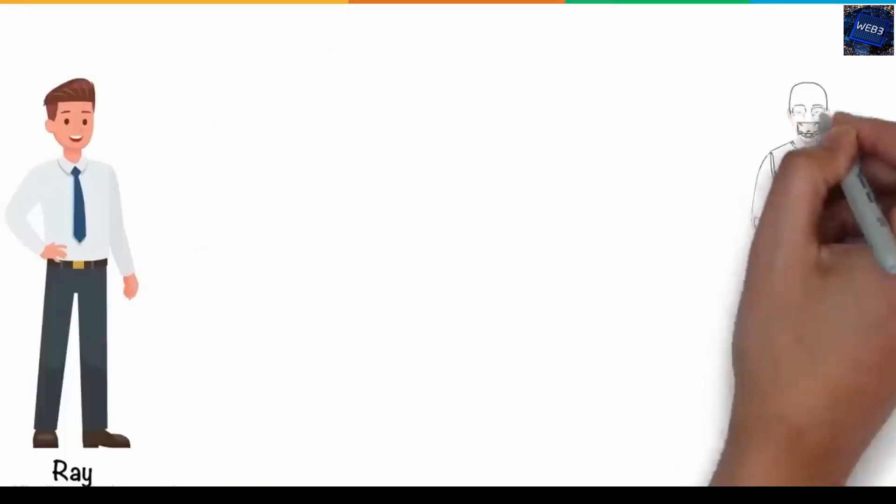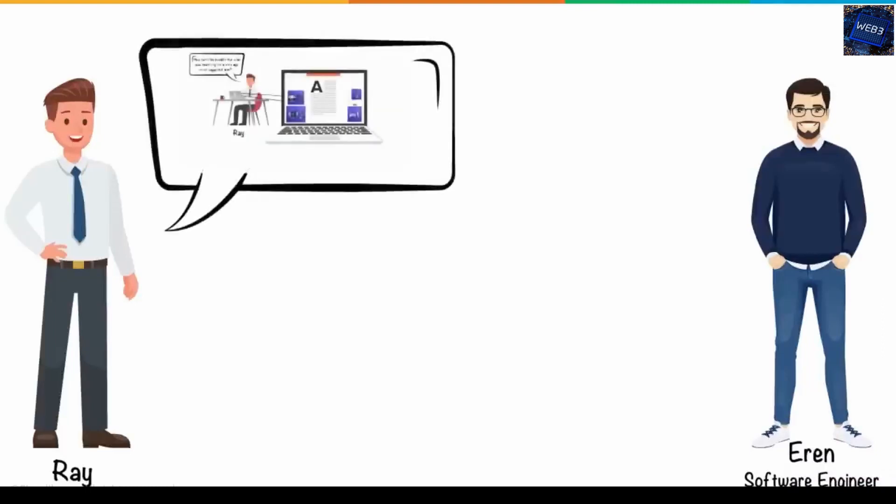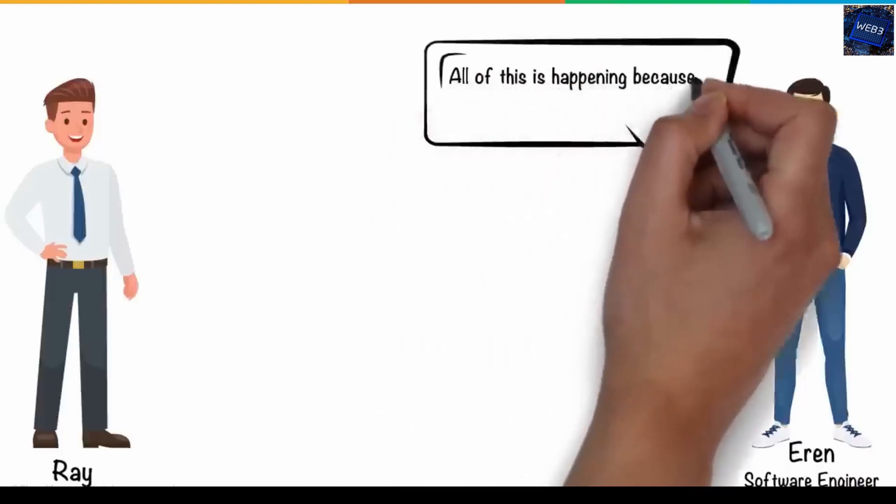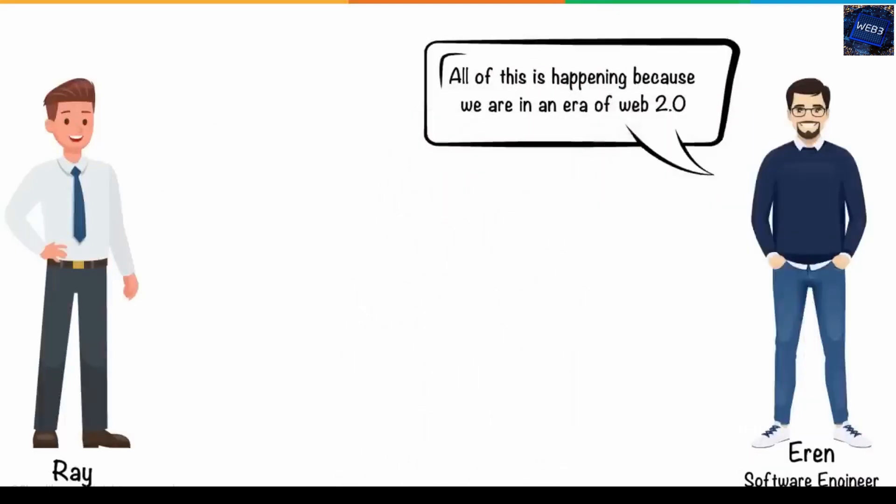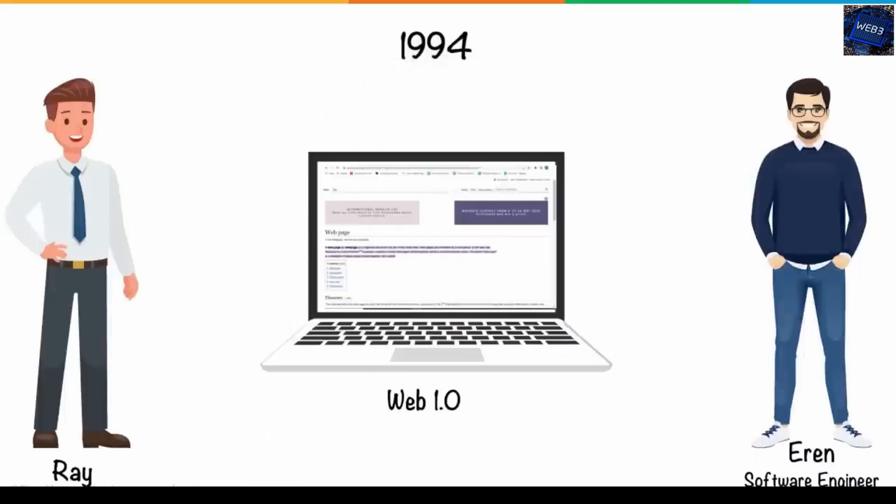So he thought of going to his elder brother Aaron, who is a software engineer in an MNC. Upon understanding the situation, he explained to Ray that all of this is happening because we are in an era of Web 2.0. It all started in 1994 when Web 1.0 was introduced to the internet.